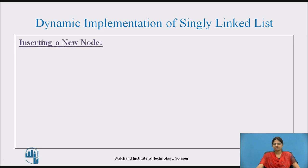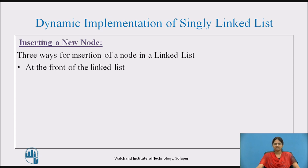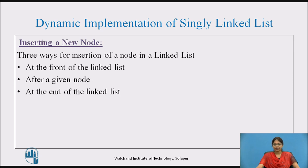Let's see the first operation — inserting a new node. There are three ways for insertion of a node in a linked list: at the front of the linked list, after a given node, and at the end of the linked list.